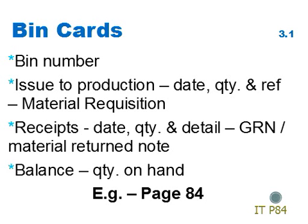which is the document that the business uses to request material from the store. Receipts: the date, quantity, and the detail of either the goods received note for material received, or material returned note for material that has been returned and not used in production. Balance: the quantity on hand after every inventory movement.